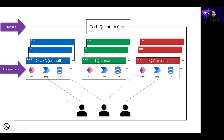So the users can only access all the features or the environments that are available within this tenant. They cannot access the resources outside this tenant. You will also see that I have denoted Tech Quantum USA, Tech Quantum Canada, Tech Quantum Australia. What this means is that an environment — whether it is a production, test, or dev environment — is bound to a geographical location like Australia, Canada, USA, or any other. When you create a Dataverse database in any particular environment, it is bound to a particular geographical location, meaning it is created in the data center available in that particular location.